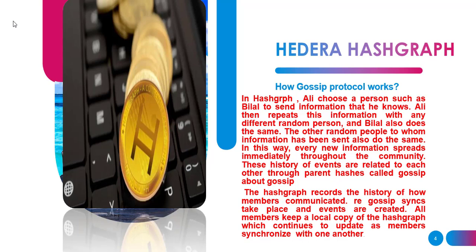When a person knows information, they gossip it to another person, who then further spreads what they received to another person, and in very few minutes or hours the information spreads throughout the whole community. So every new information spreads immediately throughout the community, and the history of events are related to each other through parent hashes — which is called gossip about gossip. The hashgraph records the history of how the members communicated and how the events took place, storing all that information in Hedera Hashgraph.